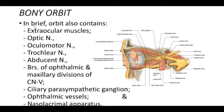The orbit also contains the extraocular muscles — that is the six extraocular muscles: the superior rectus, inferior rectus, medial rectus, lateral rectus, superior oblique, and inferior oblique. These six extraocular muscles are lying inside the orbital cavity.